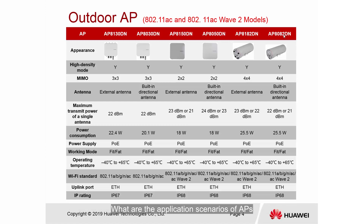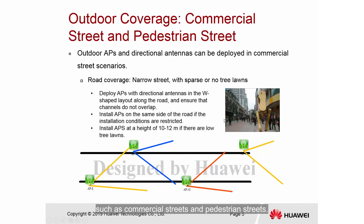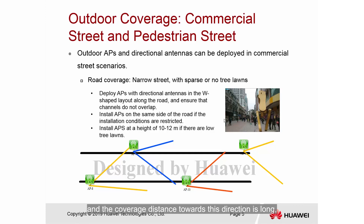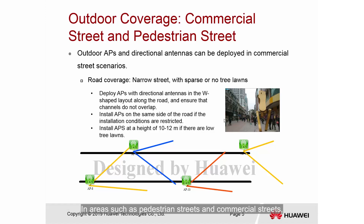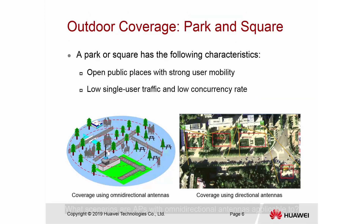APs with directional antennas are applicable to narrow and long areas such as commercial streets and pedestrian streets. Directional antennas provide coverage in one direction with a long coverage distance, but the width is narrower than omnidirectional antennas. In areas such as pedestrian streets, APs need to provide coverage in one direction without interfering with radio signals in buildings on both sides. Therefore, APs with omnidirectional antennas are not used in such scenarios.